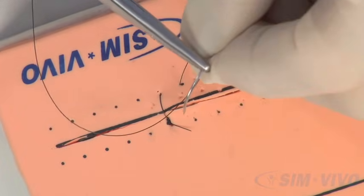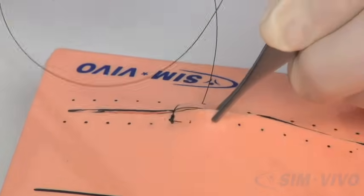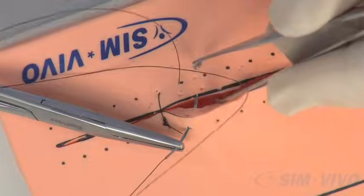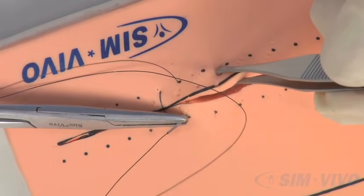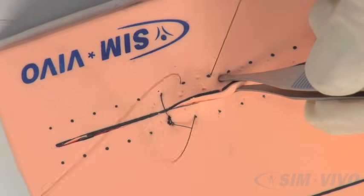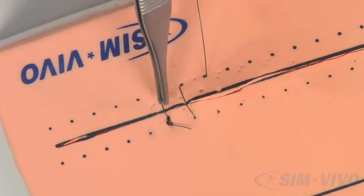Load the needle again. Lift up on the skin, enter perpendicularly, exit perpendicularly one dot down. Hold the skin as you supinate the needle through. Note that we are establishing a parallel line that the patient will see.